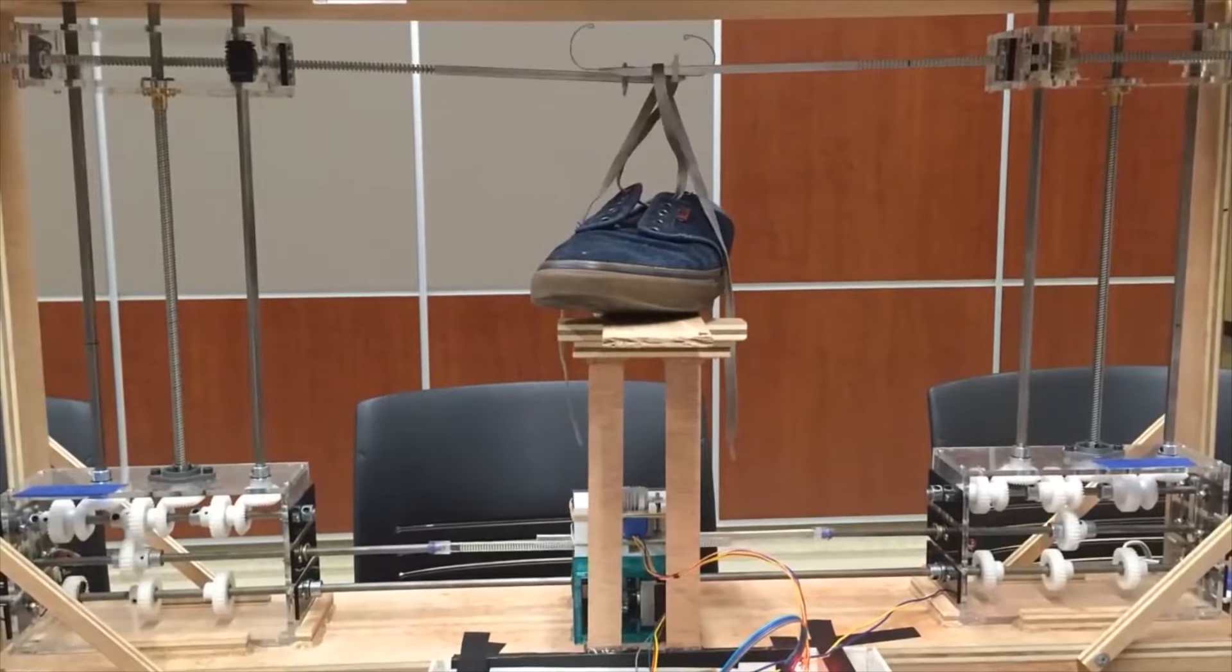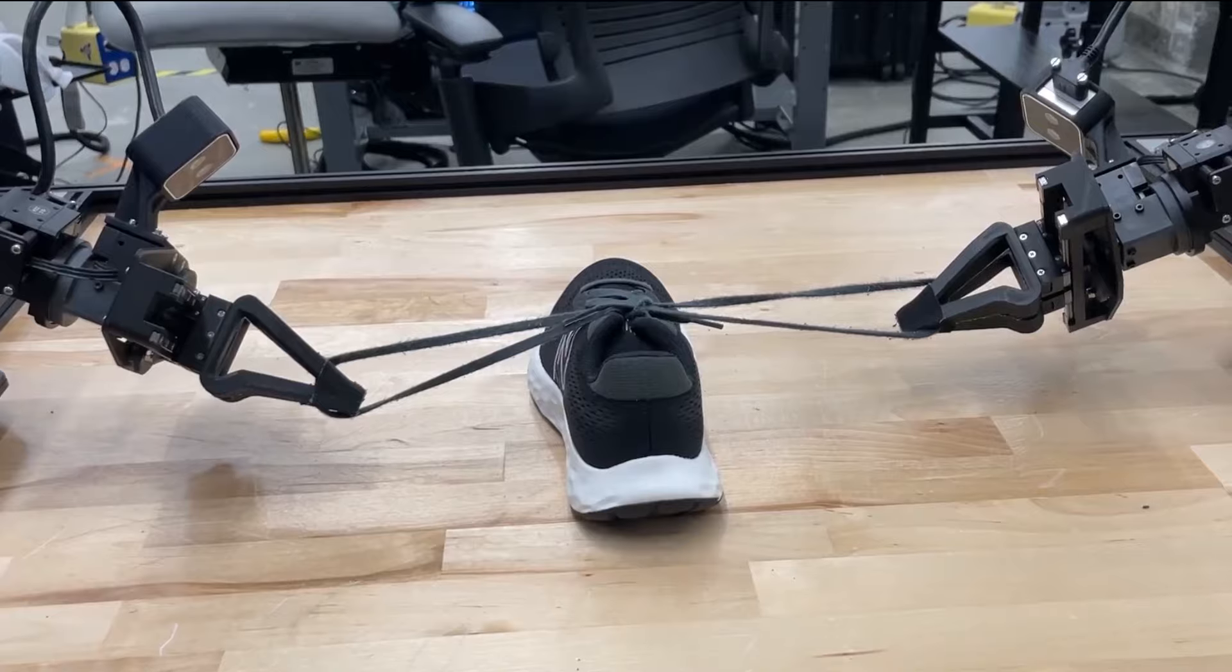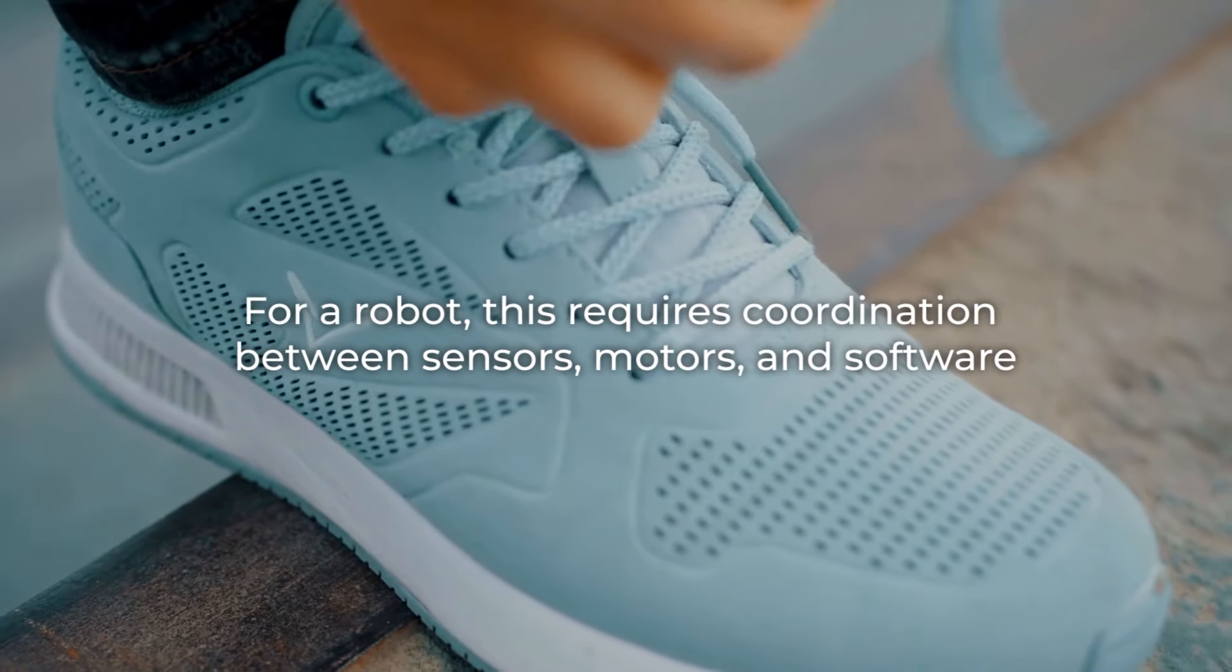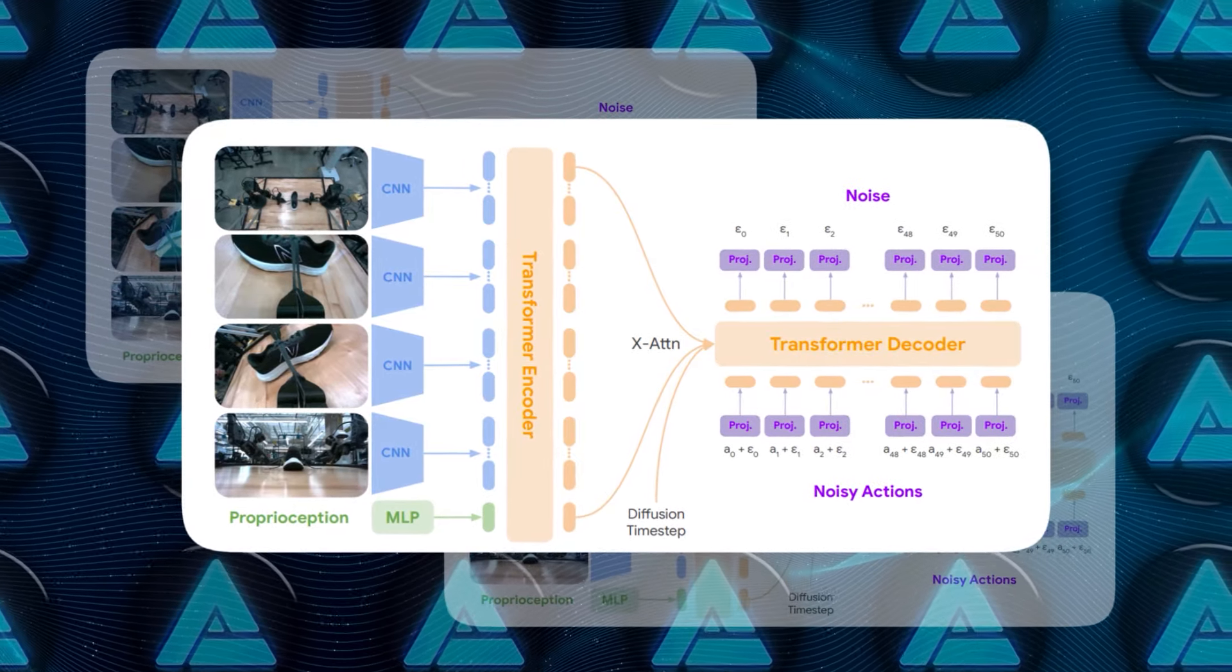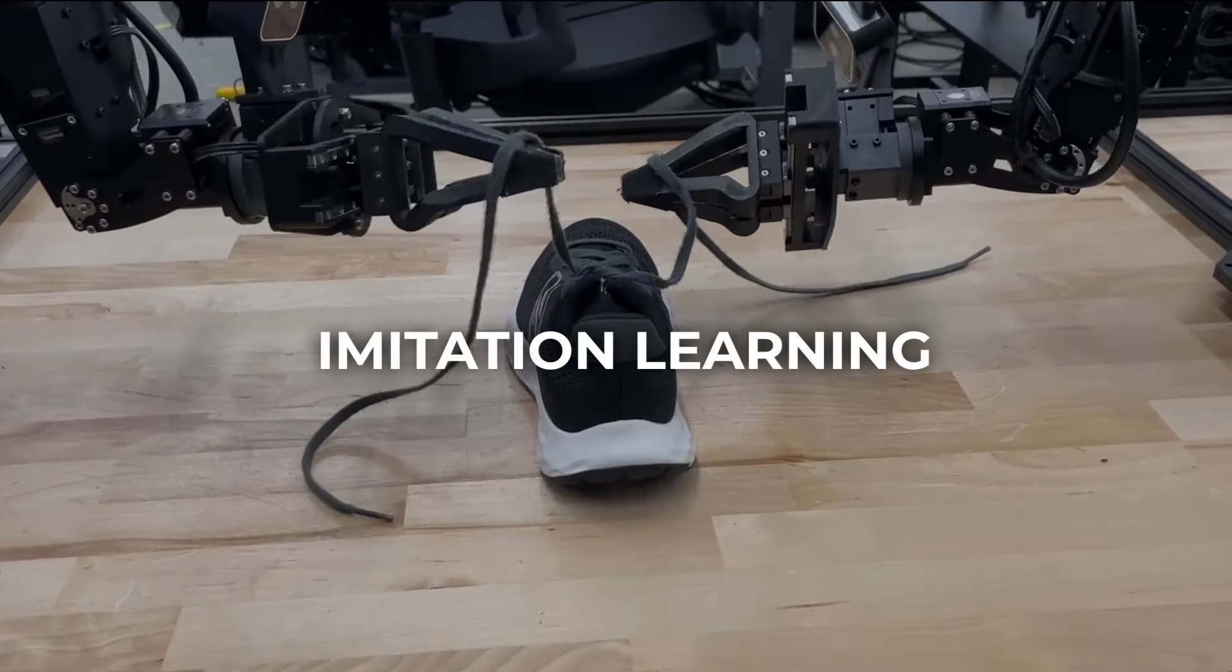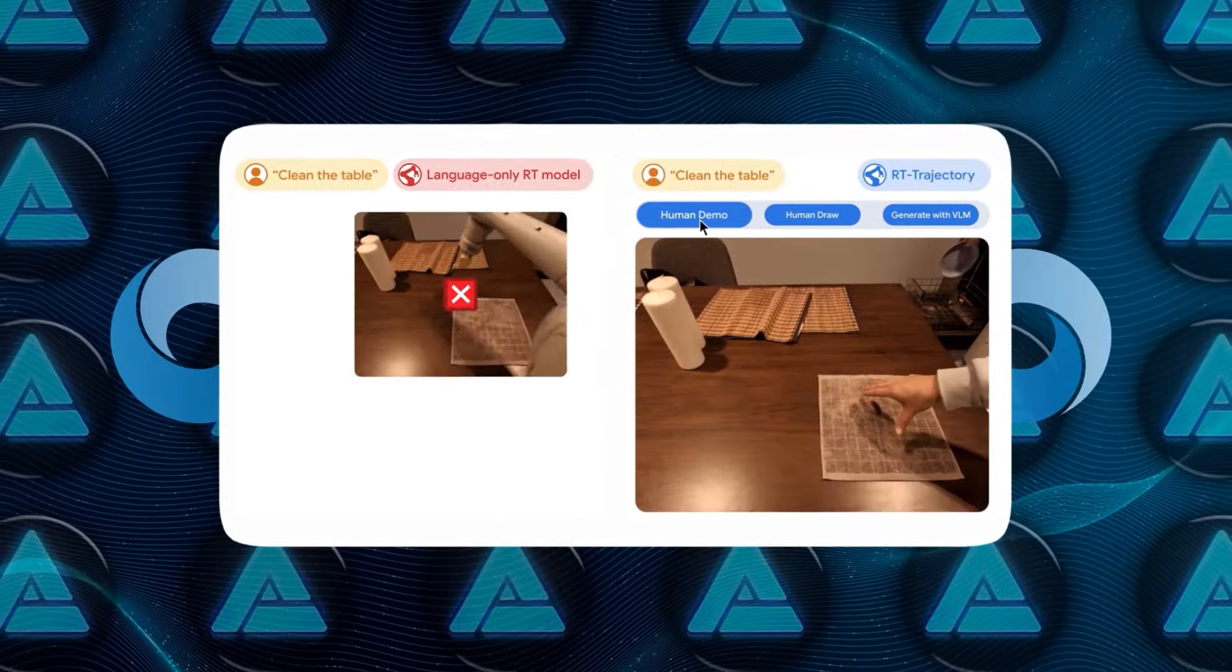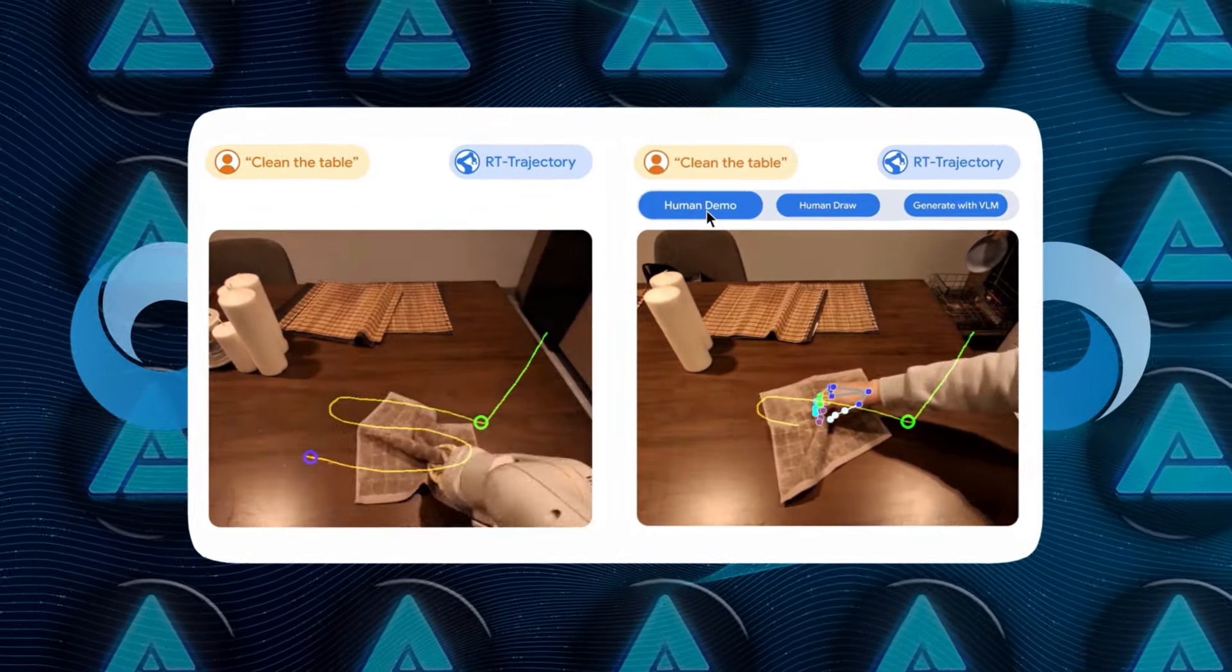Here's why that matters. Tasks like tying shoelaces involve a multitude of small, sequential steps that require both arms to move in perfect harmony. For a robot, this requires coordination between sensors, motors, and software, all while responding to real-time variables, like how the lace behaves as it's being tied. The system is able to do this by leveraging imitation learning, where a human operator initially demonstrates the task. The robot collects data from these demonstrations and then learns to perform the tasks on its own.